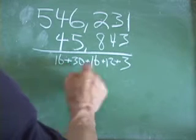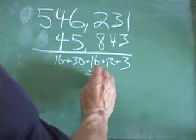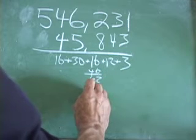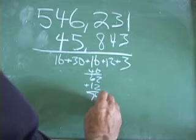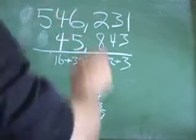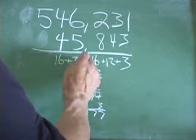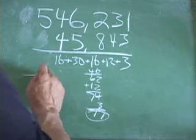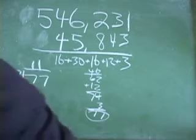And then we find what this comes out to. 16 and 30 is 46. 46 and 16 makes 62. 62 and 12 makes 74. 74 and 3 makes 77. So all this up adds up to 77. That means since these numbers here, 16 plus 30 plus 16 plus 12 plus 3 equals 77.